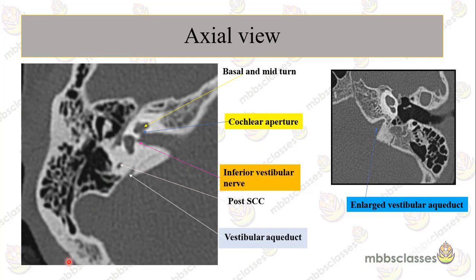In the previous slide we saw only the basal turn of the cochlea. Now the cochlear shape is changing — this is formed by the basal and mid turns of the cochlea, and this is the passage for the inferior vestibular nerves. You can also see the ossicles nicely and the mastoid. To illustrate: here is an enlarged vestibular aqueduct which is definitely more than 1.5 mm.